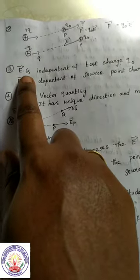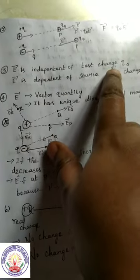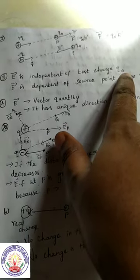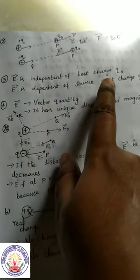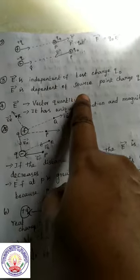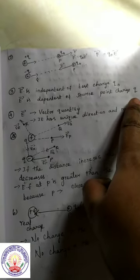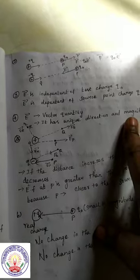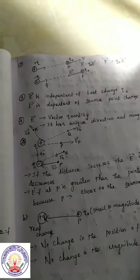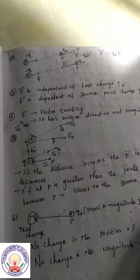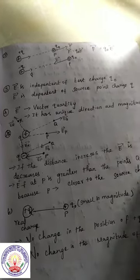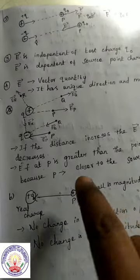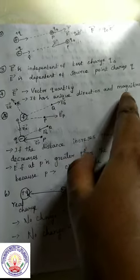Third point: the electric field is independent of test charge. Test charge is denoted by the symbol Q0. So electric field is independent of test charge Q0. The electric field depends on source point charge Q. Fourth point: electric field is a vector quantity. It has unique direction and magnitude.